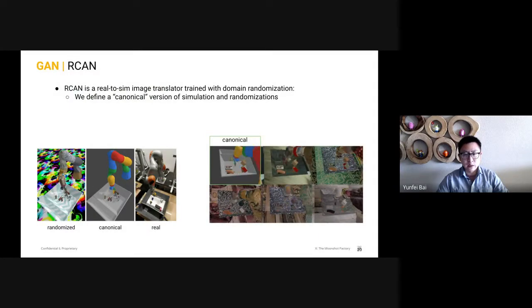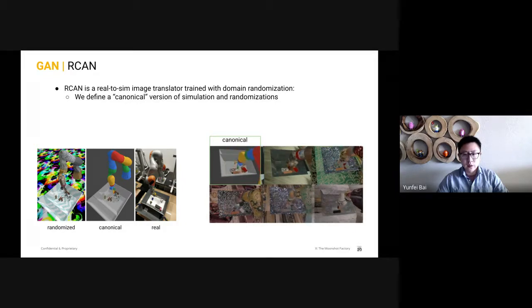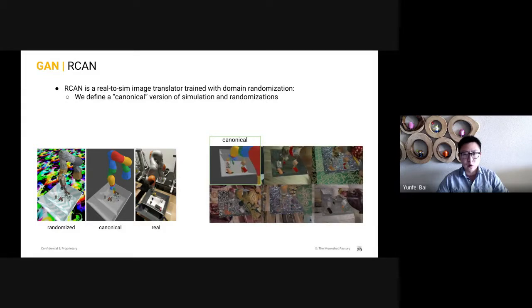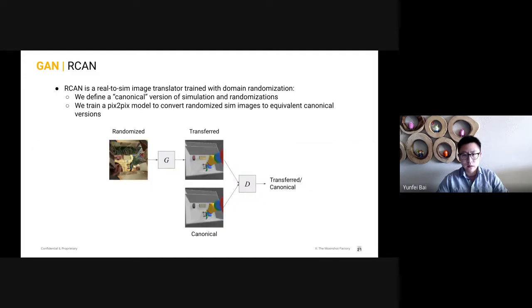Now, one problem with this previous project is that we still use real world data for training of the image generator. So the next question is, can we just use sim data to train the generator and essentially solve sim-to-real through sim-to-sim? The idea here is to train a real-to-sim image translator to convert a real world image to a canonical version in sim to bridge the gap. The image translator is trained using paired simulation data. One is in canonical form, and the other is highly randomized. The generator converts the randomized images to the canonical sim image form, and the discriminator tries to discriminate whether the image is transferred or is canonical.